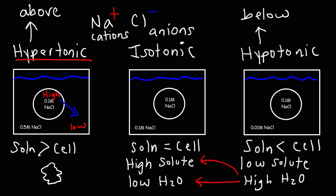This process of the cell shriveling is known as plasmolysis. In an isotonic solution, the concentration of water is the same inside and outside the cell, so water flows outward and inward equally. There is no net movement of water into or out of the cell, so the cell maintains its shape — it's not going to shrivel up, and it's not going to expand.